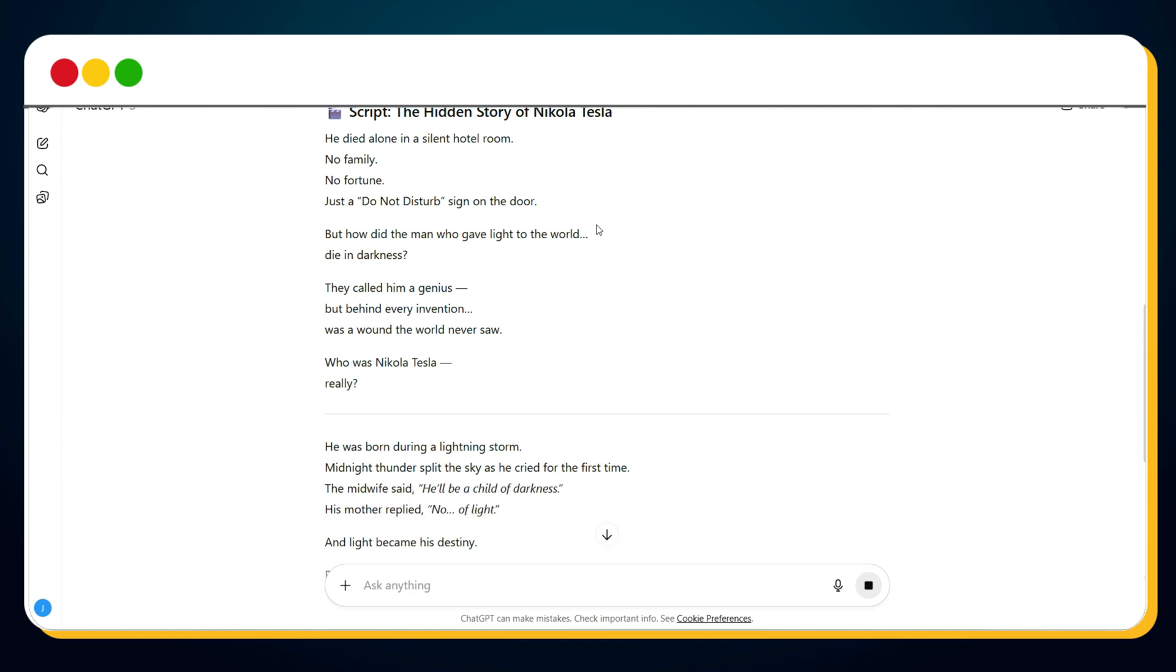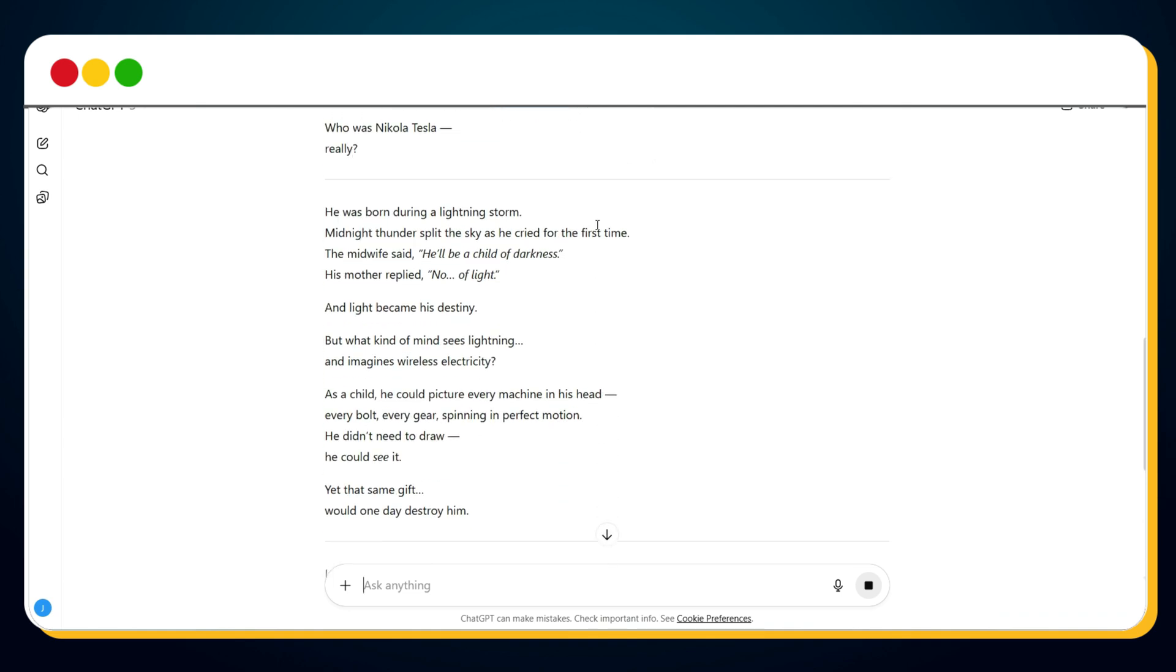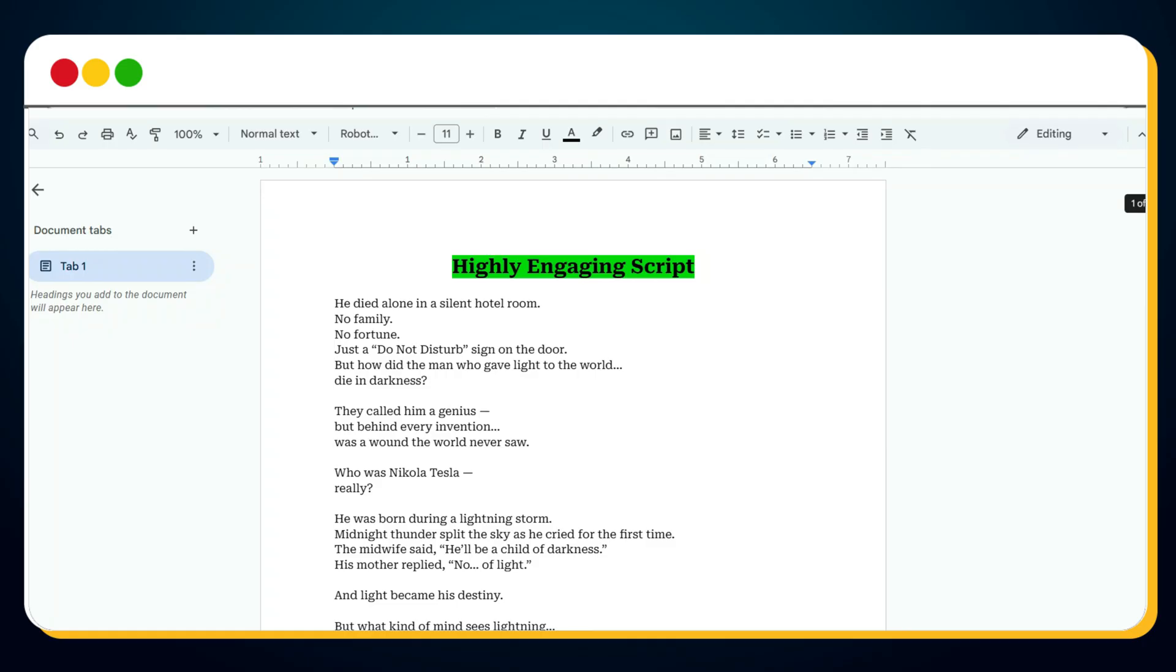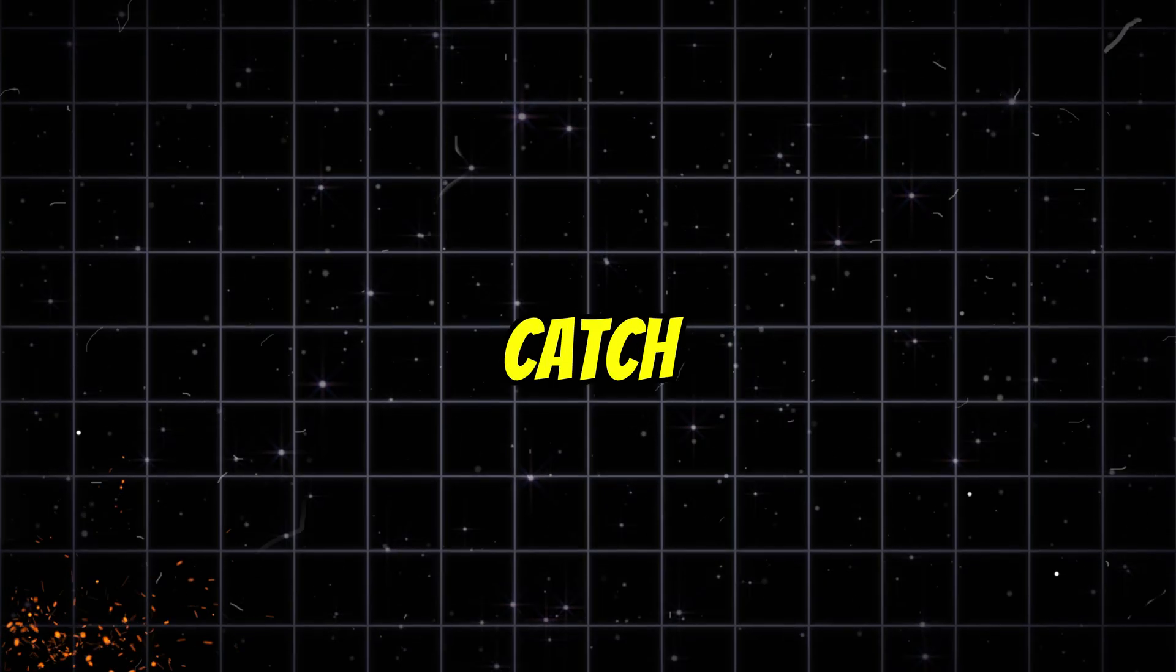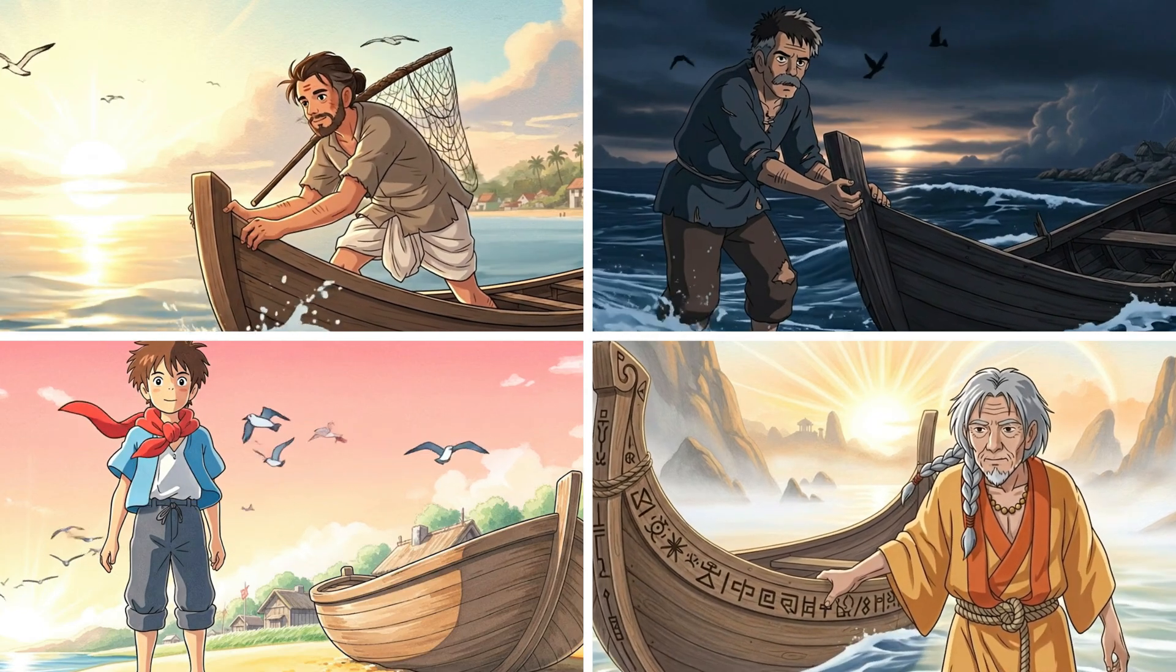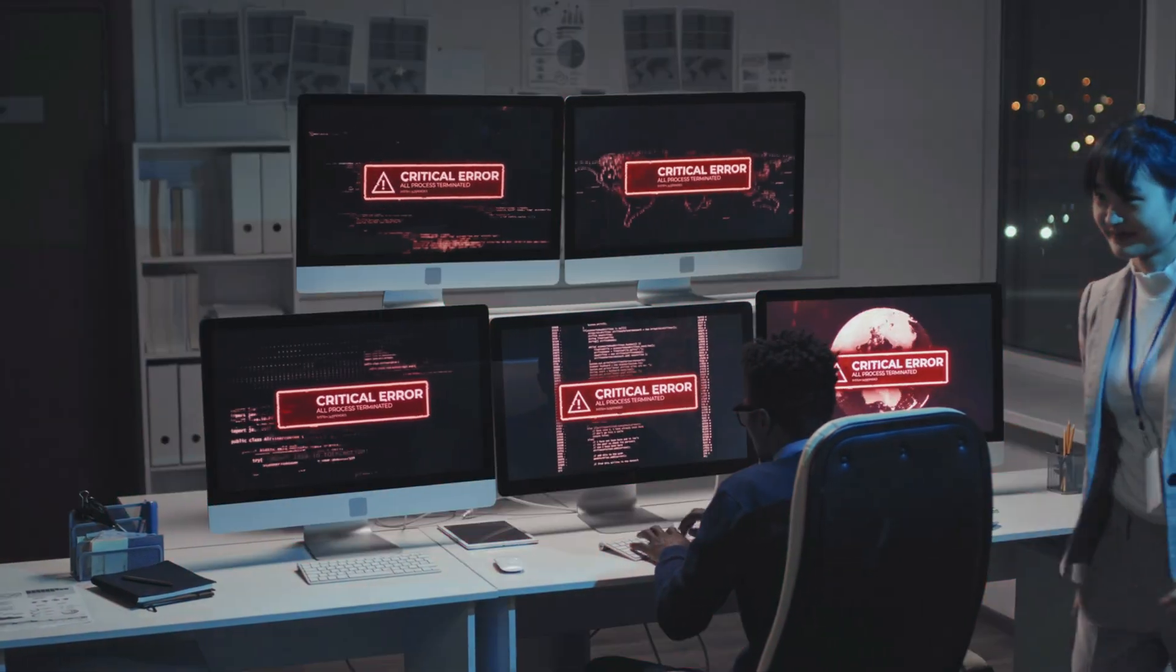And you can see ChatGPT crafting a highly engaging script using all 4 principles. The question hook, story hook, statement hook, and the new hook before payoff rule. And that's how you write a story that doesn't just tell, it grabs and holds. But here's the catch. Even the best script fails if your characters aren't consistent across scenes. That's what we'll fix next, in Chapter 2.